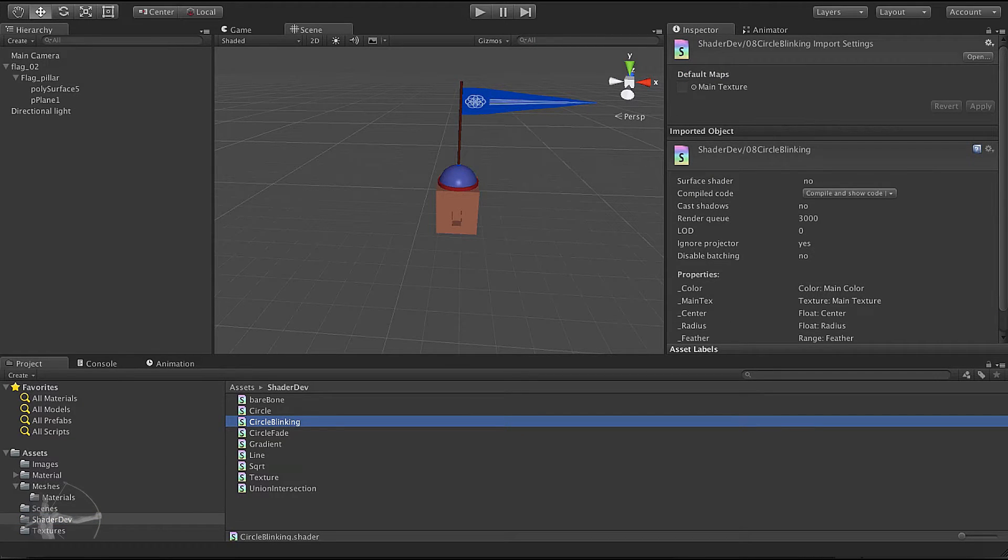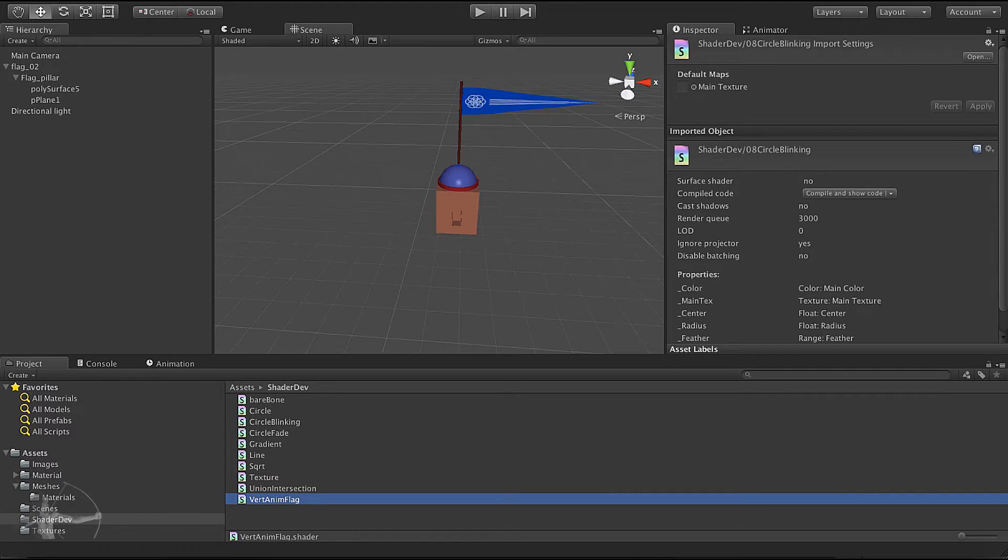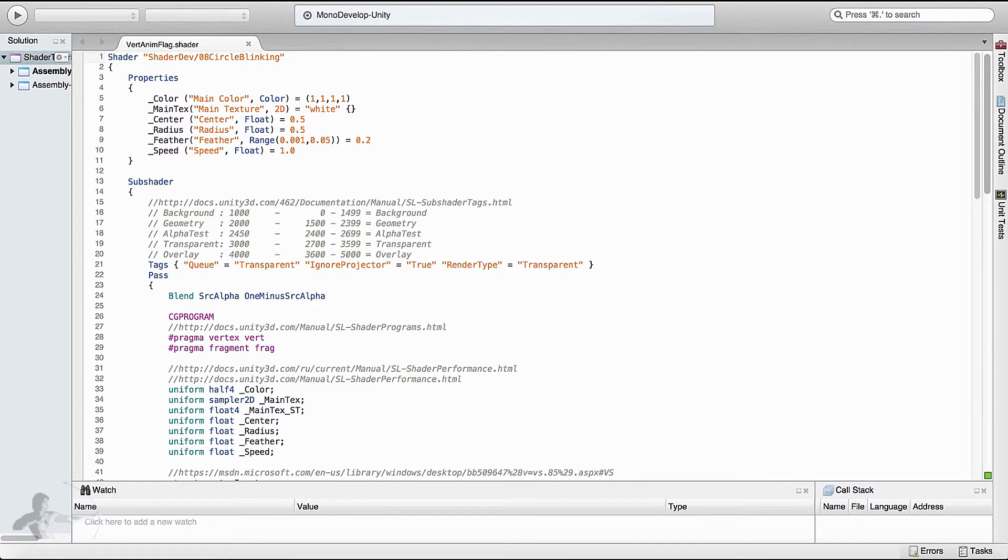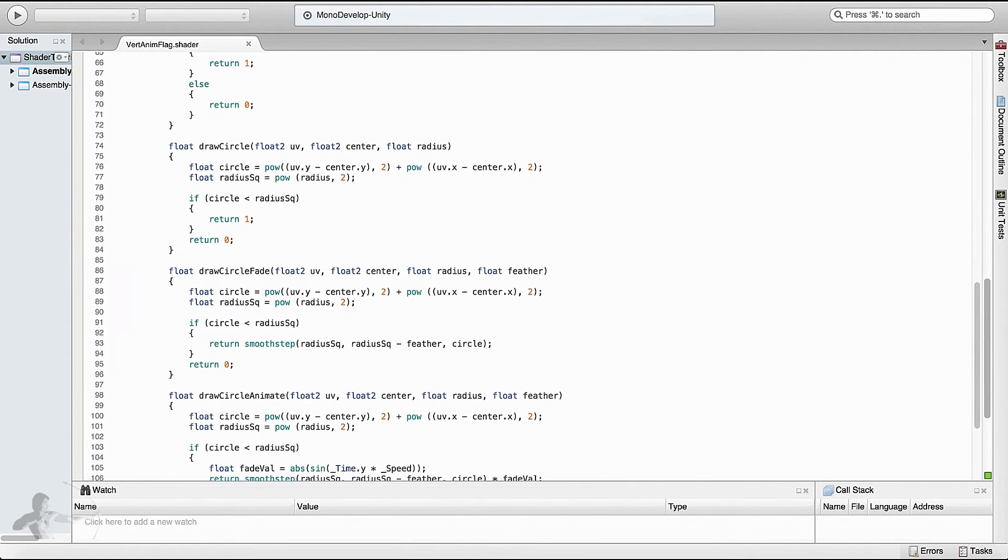We will go to the shader dev folder and I will duplicate circle blinking shader and rename it as vertex anim flag. So you would know it's a vertex animation shader and it's a waving flag shader. Double click that and this will open the shader in mono develop.